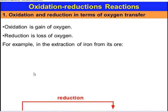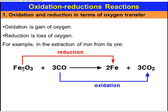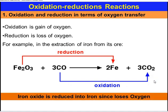As an example, we will discuss the Extraction of Iron from its ore. Iron Oxide reacts with Carbon Monoxide. The removal of Oxygen from Iron Oxide to Iron is Reduction. There is also addition of Oxygen to Carbon Monoxide to form Carbon Dioxide, therefore this process is Oxidation. Iron Oxide is reduced to Iron since it loses Oxygen, and Carbon Monoxide is oxidized to Carbon Dioxide since it gains Oxygen.